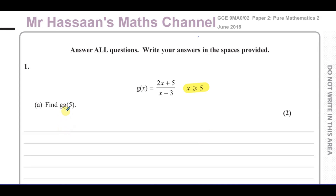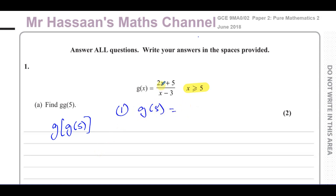So what does GG(5) mean? It means find the value of G(5) and substitute that value back into the function G. The first step is to find G(5) by replacing X with 5 in the function. So instead of 2X we get 2 times 5, plus 3 over 5 minus 3. That gives us G(5) = (10 + 5) / 2 = 15/2.